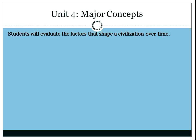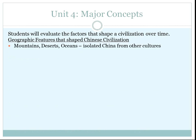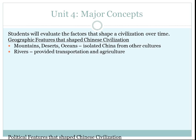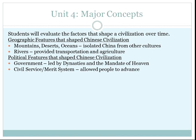What kinds of things shaped civilization over time? We're going to apply this to the Chinese civilization. In terms of geography, you had geographic features such as mountains, deserts, oceans, and ice that isolated China from other cultures. Rivers provided transport and agriculture. Political features that shaped Chinese civilization were government, the civil service, and the merit system.